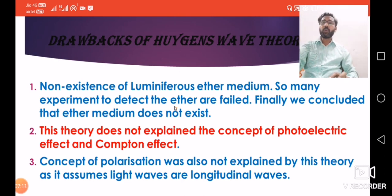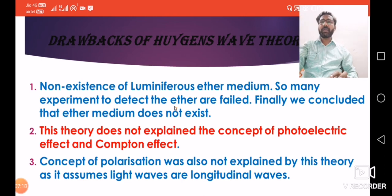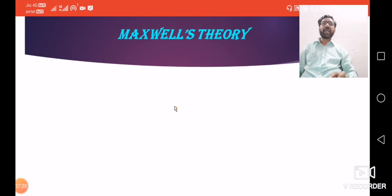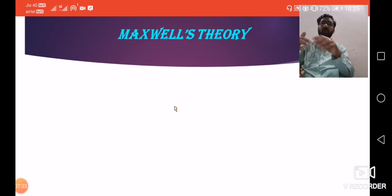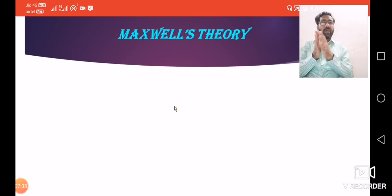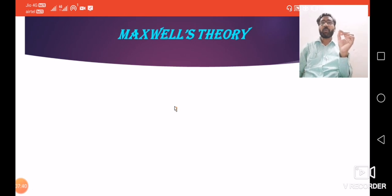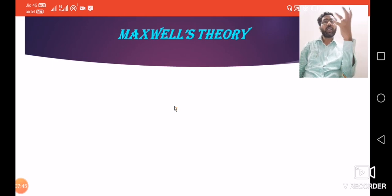From 1672 up to the 19th century, these theories were used and experiments to detect the luminiferous ether medium all failed. Finally, another scientist — Maxwell — modified Huygens' theory. He changed the first point of Huygens' theory — that light is emitted in the form of small longitudinal waves — by removing the word 'longitudinal'.